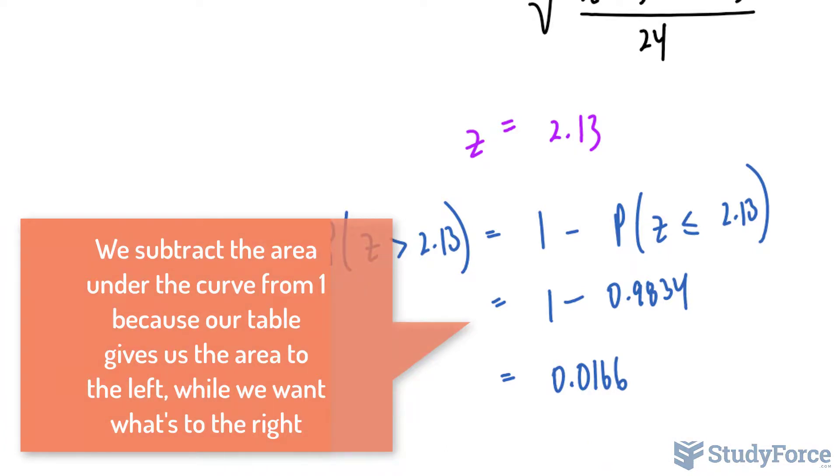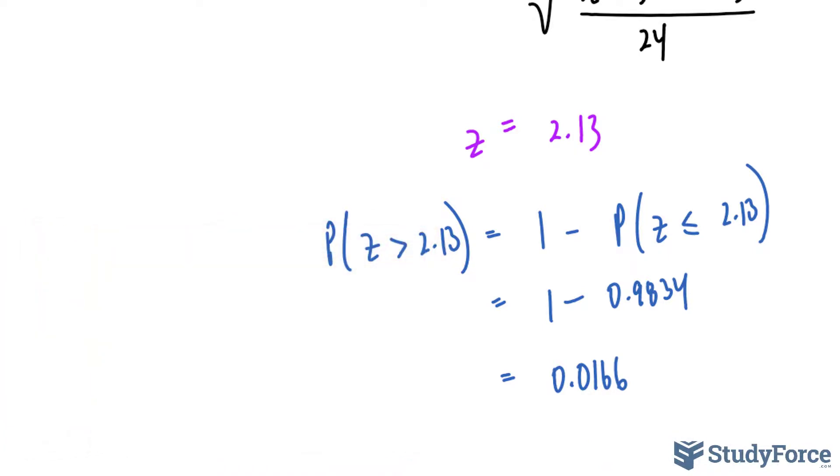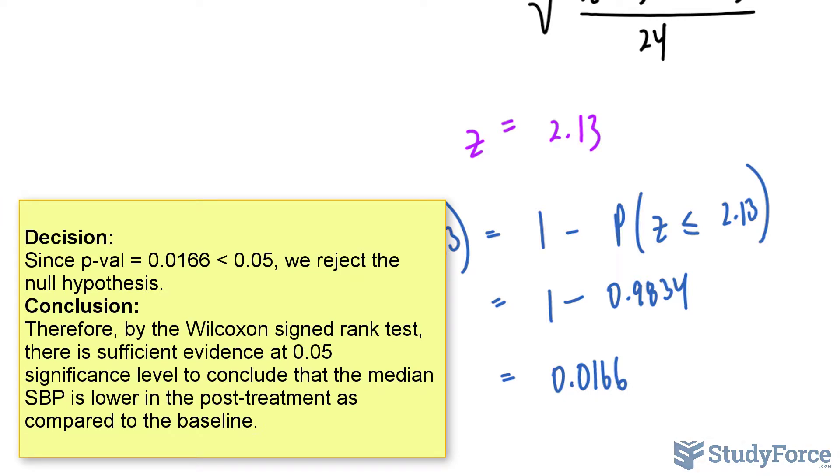And from this value, we can actually make our decision whether to reject or do not reject the null hypothesis. Because 0.0166 is less than 0.05, we have to reject the null hypothesis.